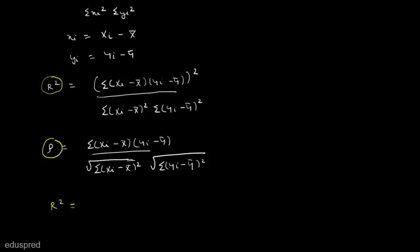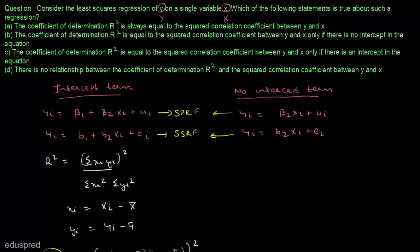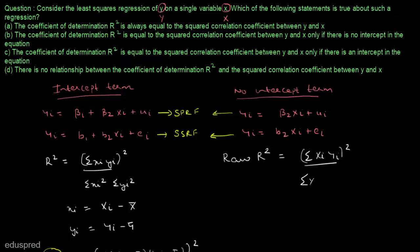So when we have an intercept term present in the model, r-square equals the squared correlation coefficient between x and y. Now, when we do not have an intercept term in the model, instead of r-square we calculate raw r-square. The formula is: summation of (capital Xi times Yi) whole square, divided by summation capital Xi-square times summation capital Yi-square. This is called raw r-square because we are working with raw sums of squares and cross products, not mean-corrected ones.